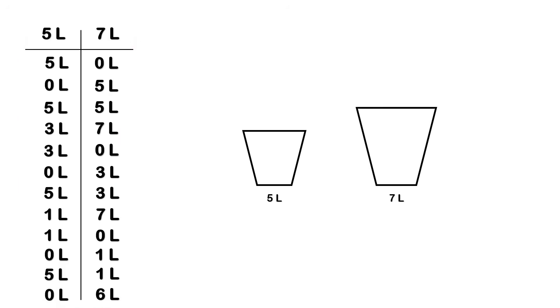The first move to the point (5,0) means we completely fill the 5-liter bucket. The next move means we pour the water from the 5-liter bucket into the 7-liter bucket, which brings us to (0,5). The next move is filling the 5-liter bucket again, giving us (5,5).